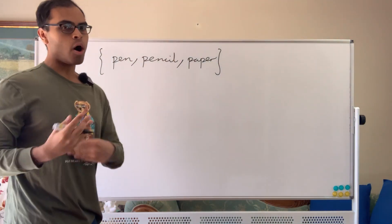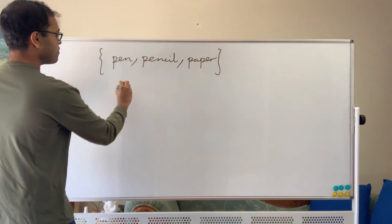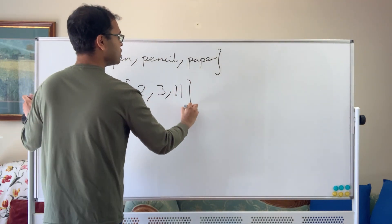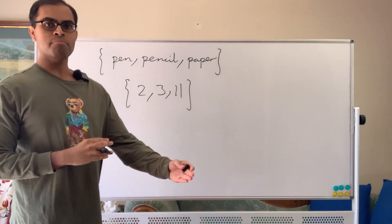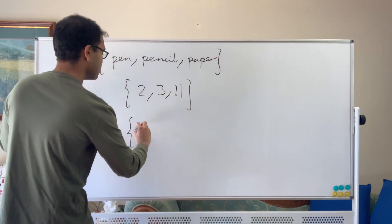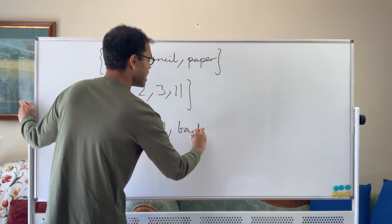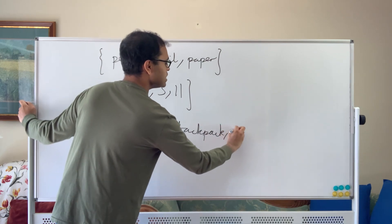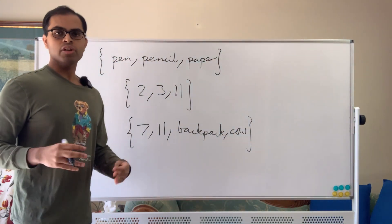Sets can have objects that are very abstract or arbitrary. For example, you can have a set of numbers like {2, 3, 11}. You can have a set which consists of numbers, animals, objects, etc. So for example you can have something like {7, 11, backpack, cow}. This is also considered a set — sets are just a means of collecting things.